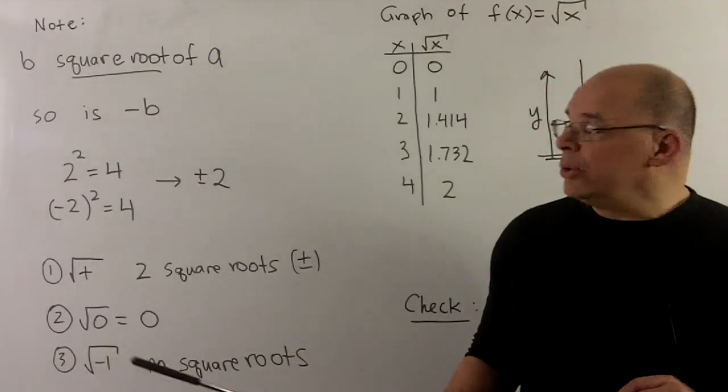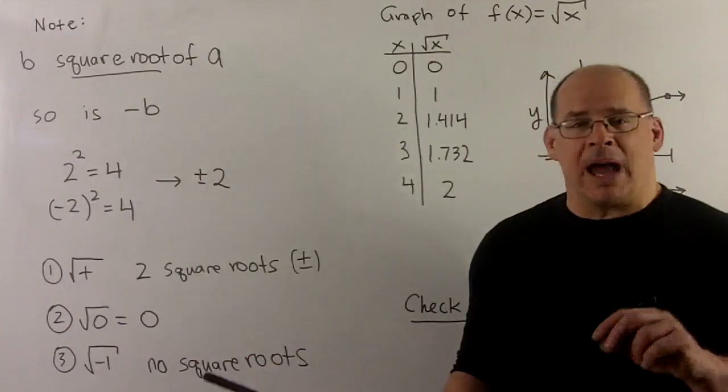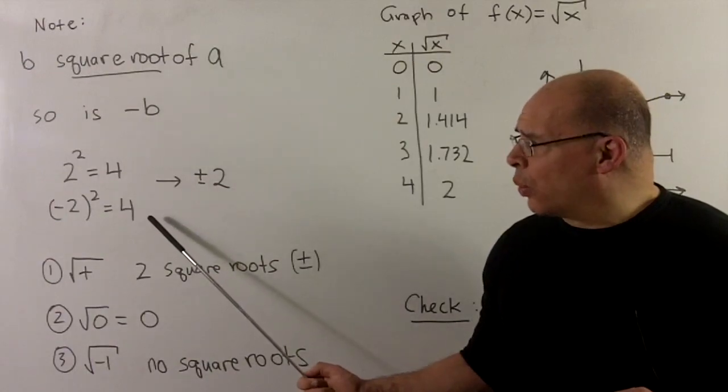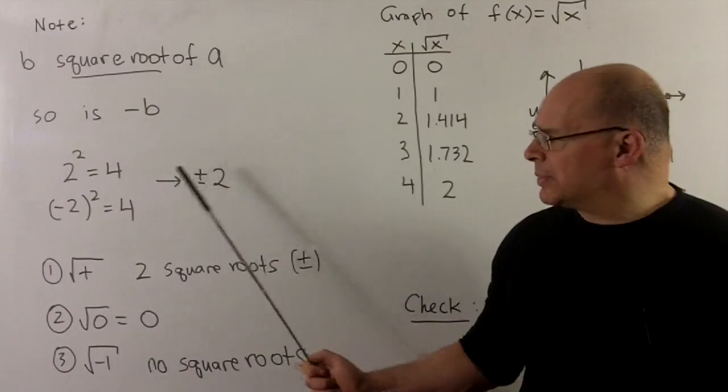We'll also get another square root in general. If I take minus two, we square that, I get minus two times minus two, minus minus is a plus, which will also give us a four. So four has two general square roots, plus minus two.